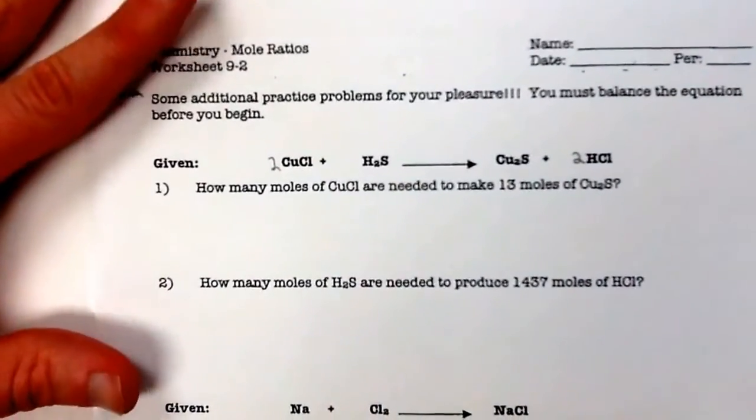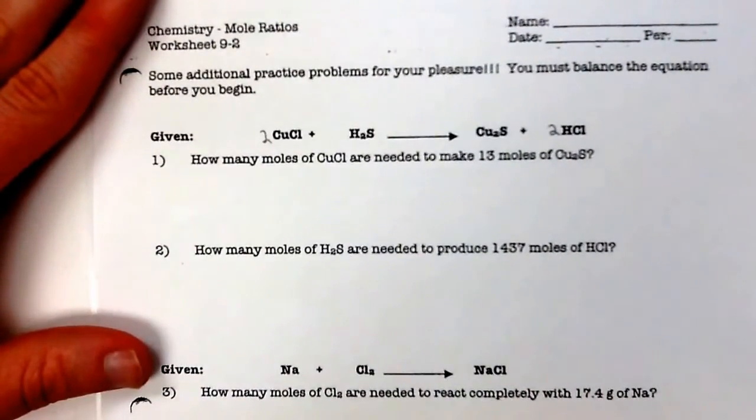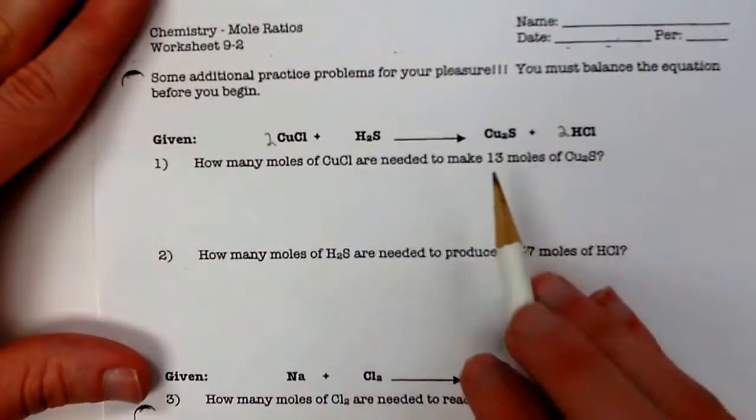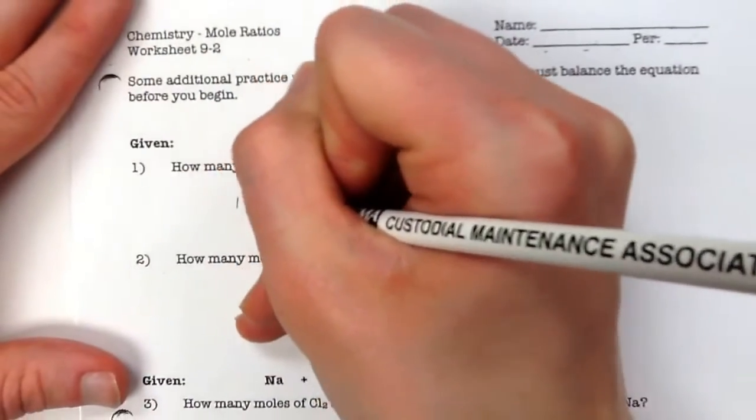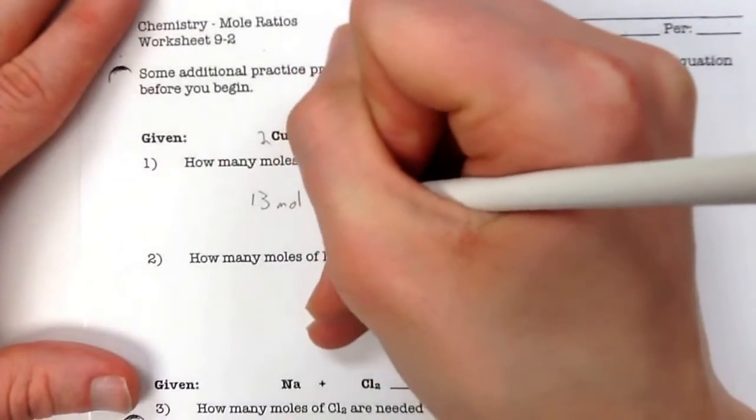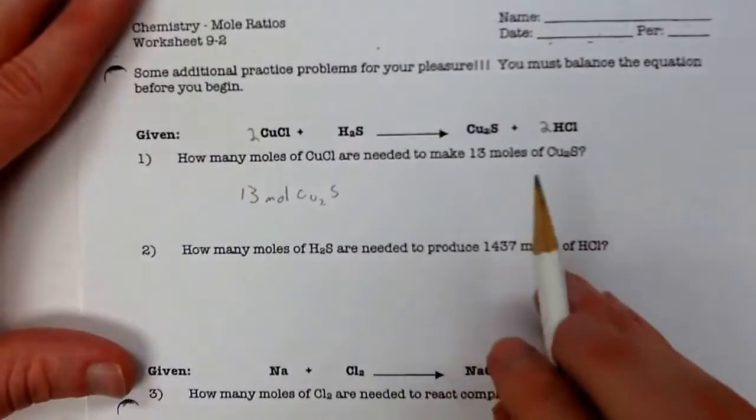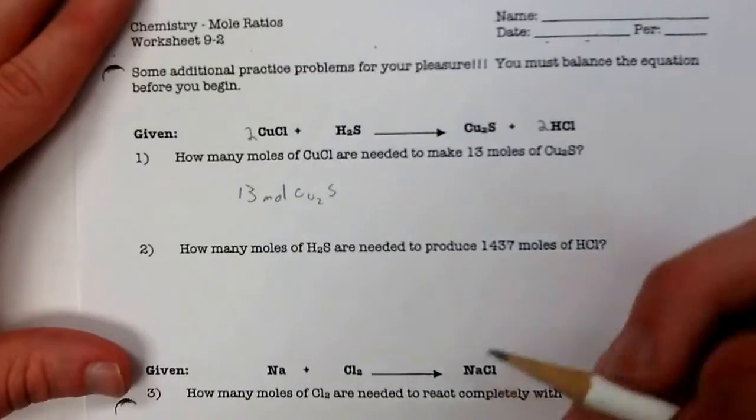So for this one, we're going to do the first problem here. It says, how many moles of CuCl are needed to make 13 moles of Cu2S? So you start with the value that you are given in the problem, which is 13 moles of Cu2S. Now, since this is a moles to moles jump, this is just going to be a one-step problem.